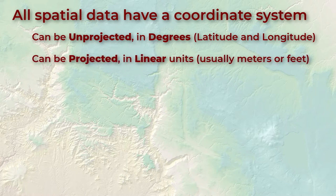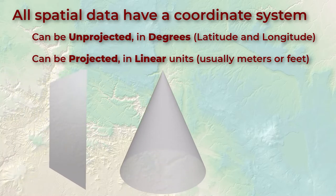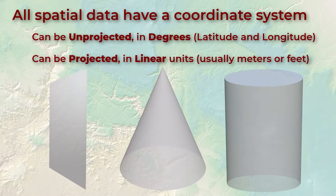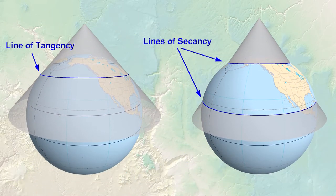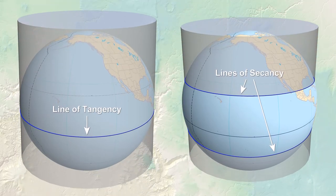This leads us to projections — taking the curved surface of the planet and making it flat. You can't do this without distorting the data, unfortunately. There are three projection surfaces we often project onto: planes, cones, and cylinders, all of which can be unrolled to form a plane.